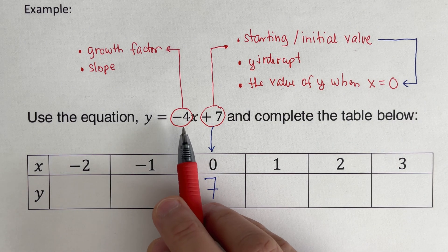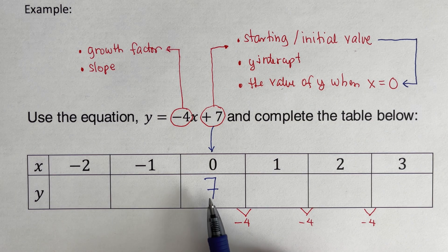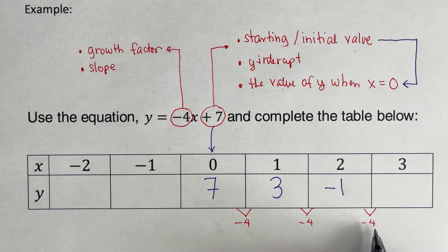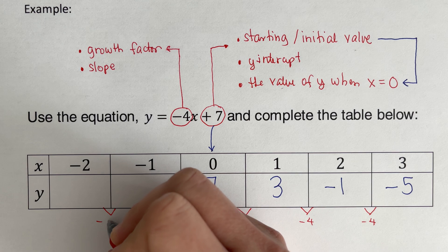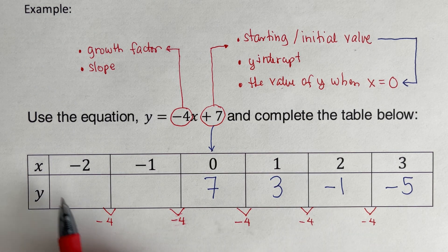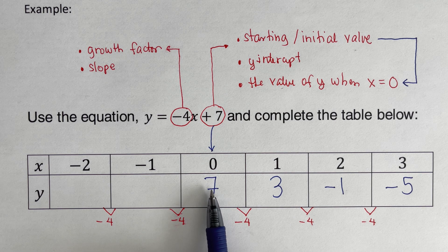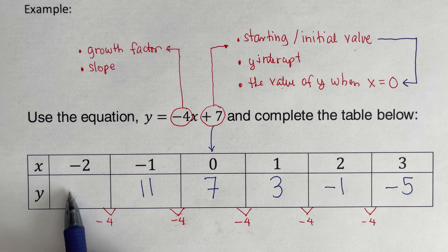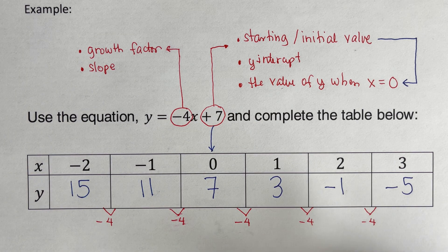The growth factor here is negative 4, so we subtract 4 each time to get the next value. Starting from 7: 7 minus 4 is 3, then 3 minus 4 is negative 1, then negative 1 minus 4 is negative 5. Going the other direction, to find the value before 7 we add 4: 7 plus 4 is 11, and 11 plus 4 is 15. We have now completed the table.